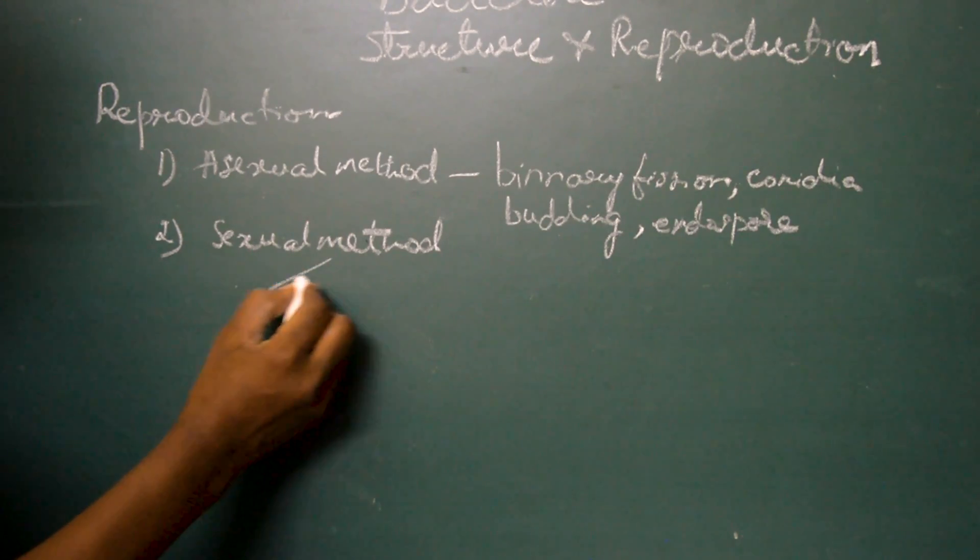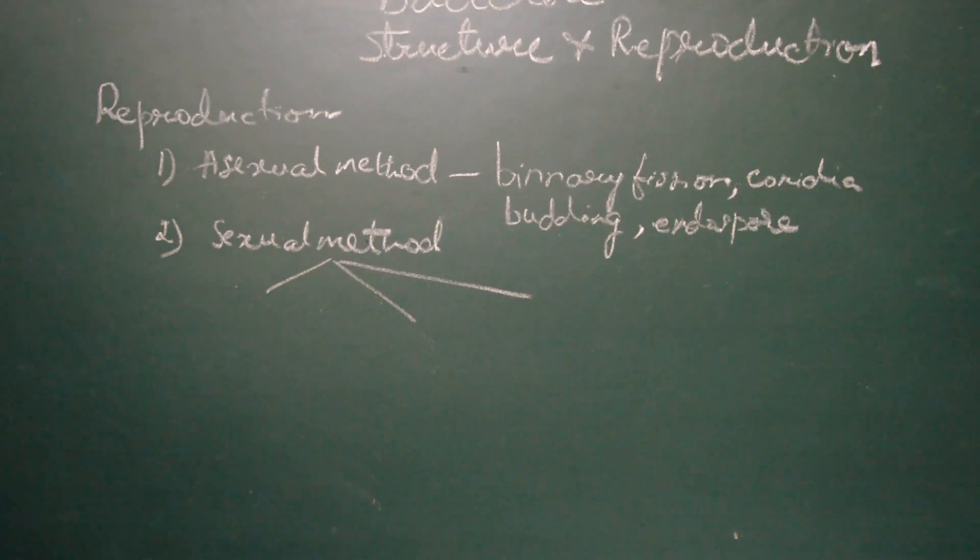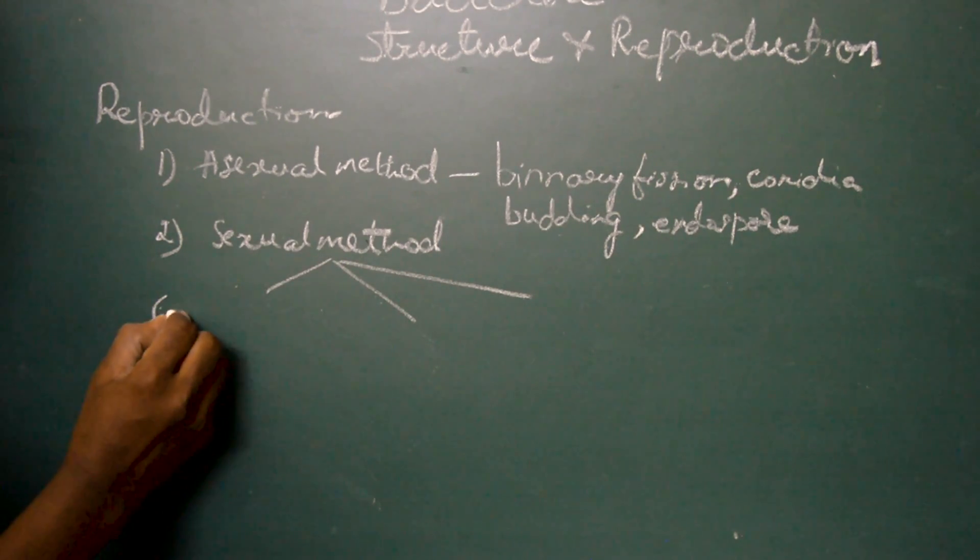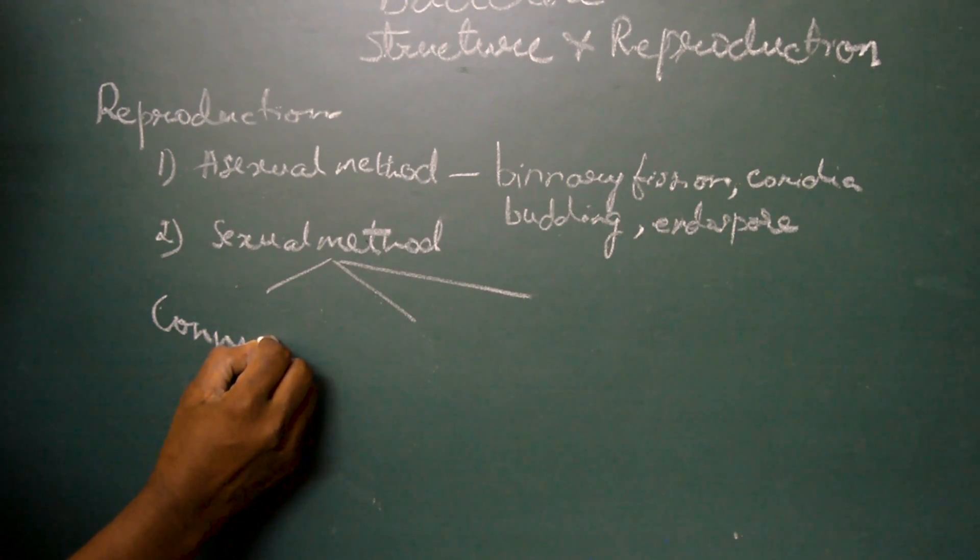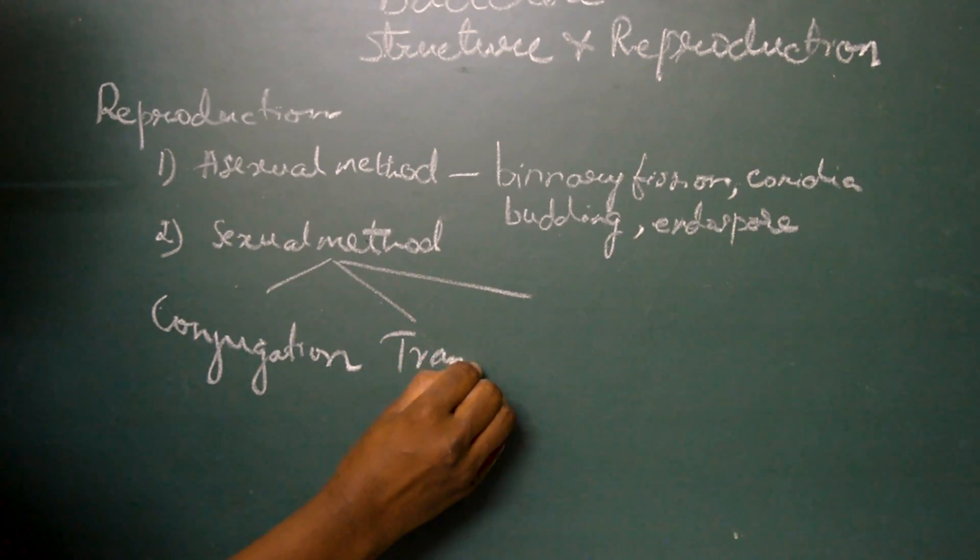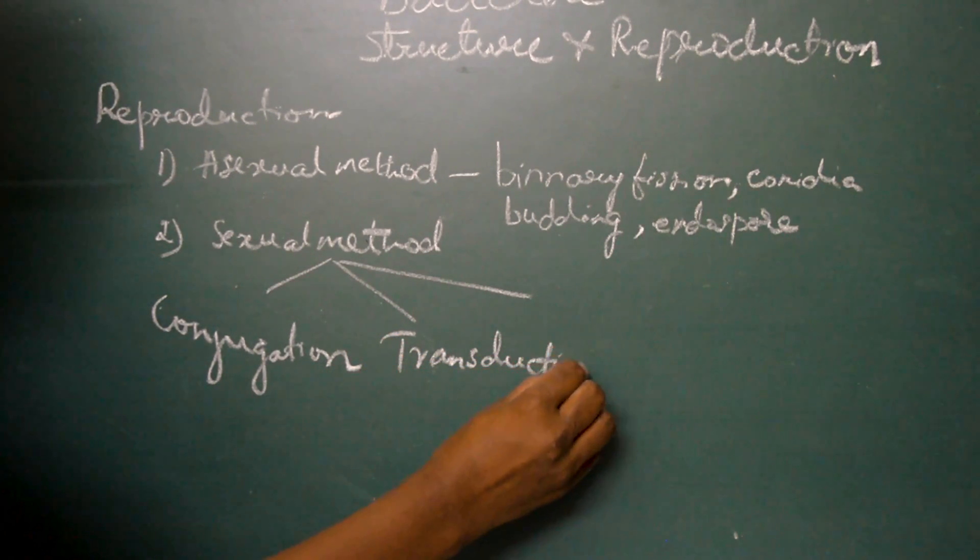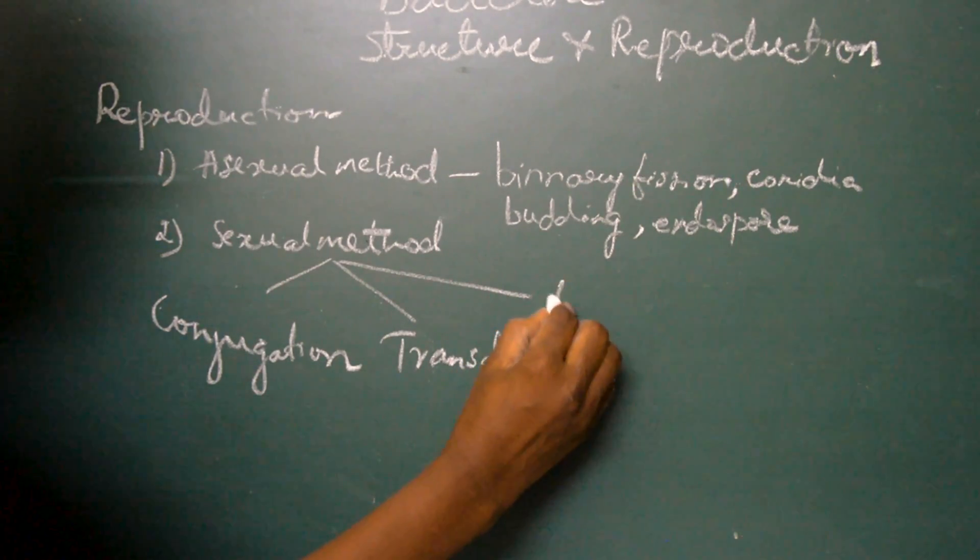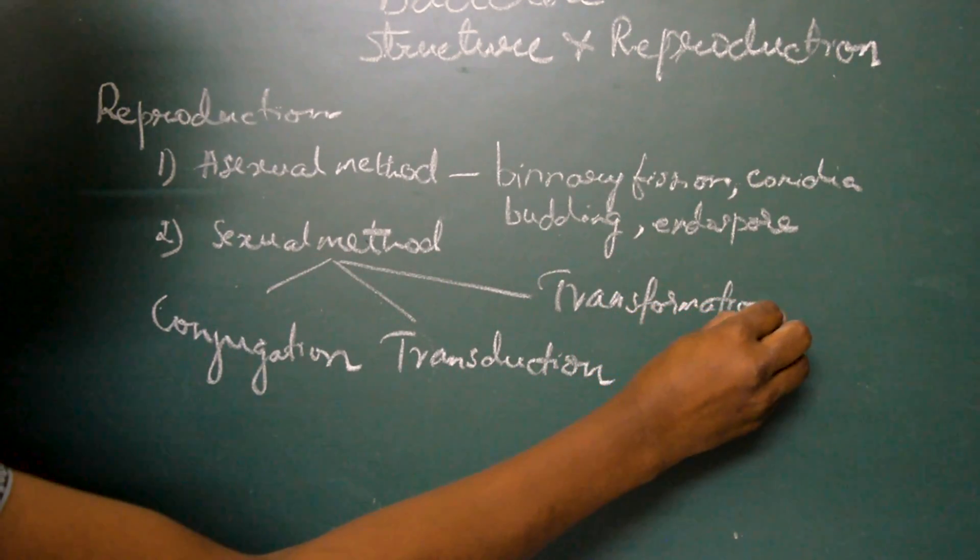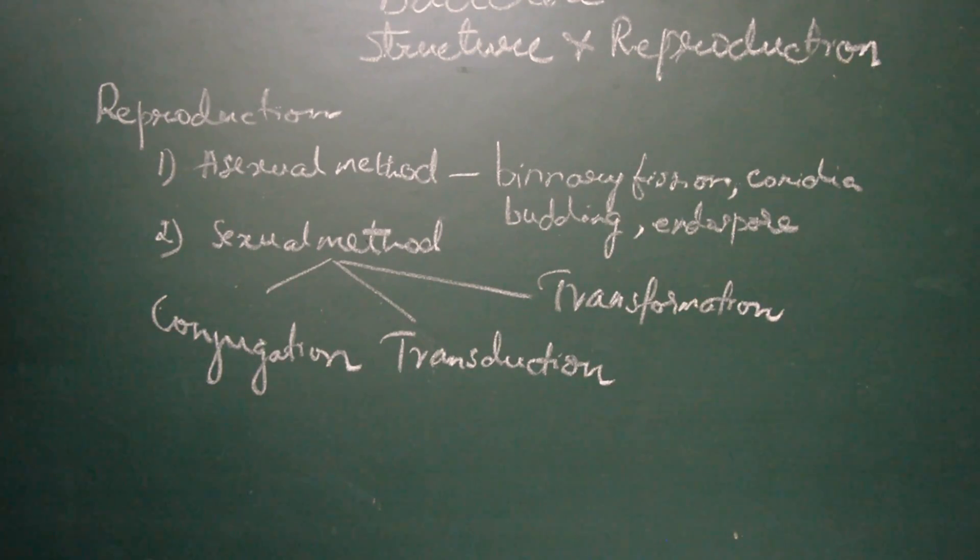The sexual method of reproduction can be further divided into three types. Actually this is not a true sexual reproduction because there is no gamete formation. Only because there is a transfer of genetic material from one cell to the other this is considered to be a sexual reproduction. One of the modes is conjugation, the second type is transduction, and the third one is transformation. We are going to discuss in detail about all this later in the next video.